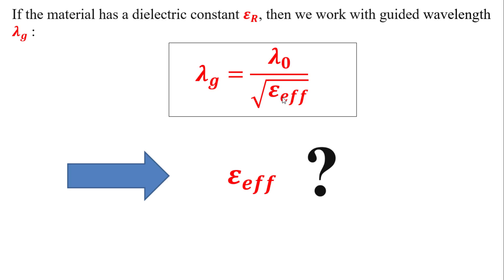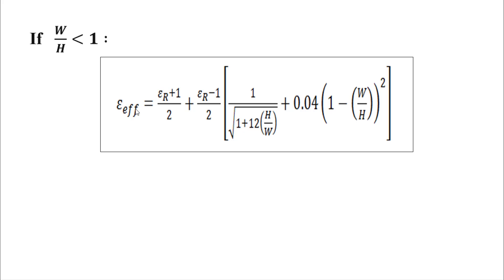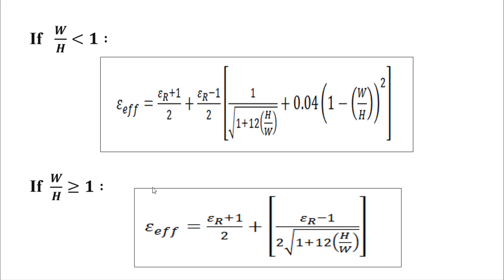To find the effective dielectric constant, we have two cases. The first case: if the ratio between the width of the line and the height of the substrate is less than one, we use the first equation for effective electric constant, which equals (epsilon r + 1) / 2 plus a correction term. The second case: if w/h is greater than or equal to one, we use a different equation.